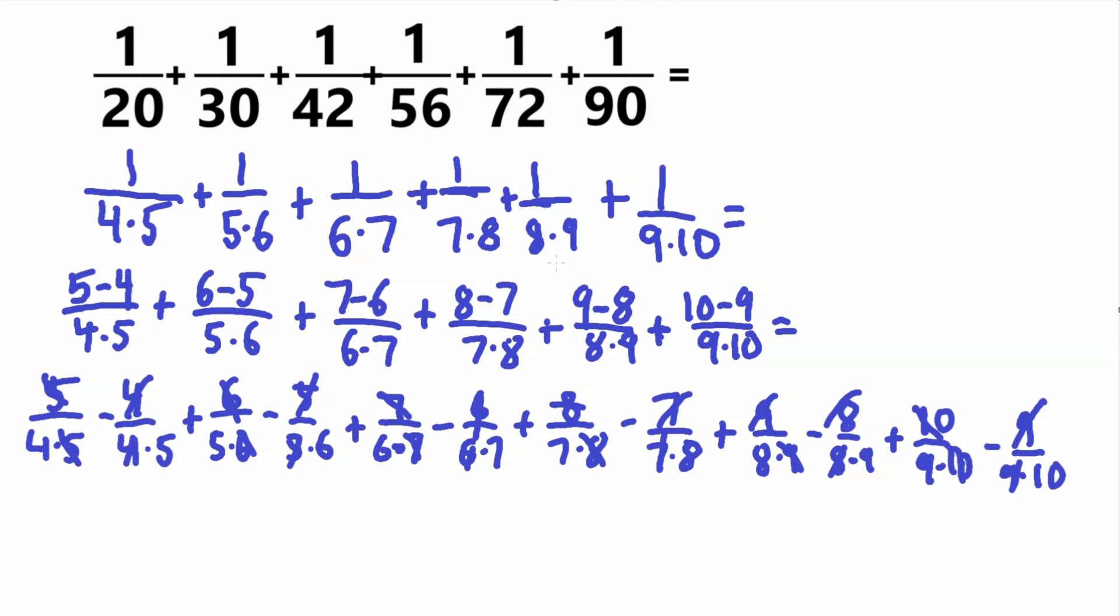So that leaves us with, let's rewrite that, 1 fourth, because when you cancel out in the numerator it just becomes 1, and here we have 4, minus 1 fifth, plus 1 fifth, minus 1 sixth, plus 1 sixth, minus 1 seventh, plus 1 seventh, minus 1 eighth, plus 1 eighth, minus 1 ninth, plus 1 ninth, and that is the final one, will be minus 1 tenth.